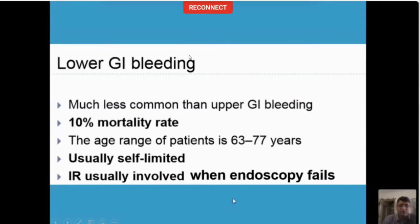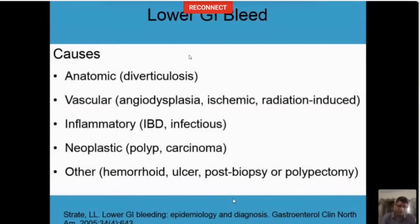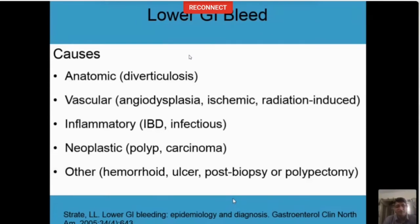When does IR come into play? When endoscopy fails. First, you always try conservative management, and if it fails, then IR comes into play. The common causes of lower GI bleed include diverticulosis, Meckel's diverticulum, vascular causes such as angiodysplasia, ischemic or radiation-induced disease, inflammatory bowel disease including Crohn's or ulcerative colitis, and neoplastic causes like polyps after polypectomy or carcinoma. All of these can be identified on CT scan, or you might need a radionuclide scan.